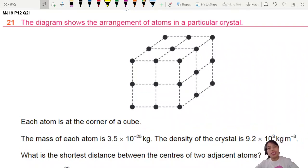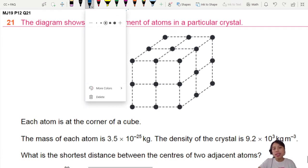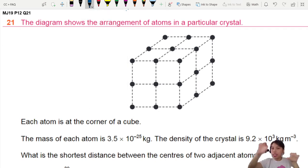Let me just say that this question is a little bit of a pain in the butt. It's very unusual for a physics question. In fact, it's more of a chemistry question. But here you have arrangement of atoms in a crystal. It's what we call a lattice, a grid, a network.